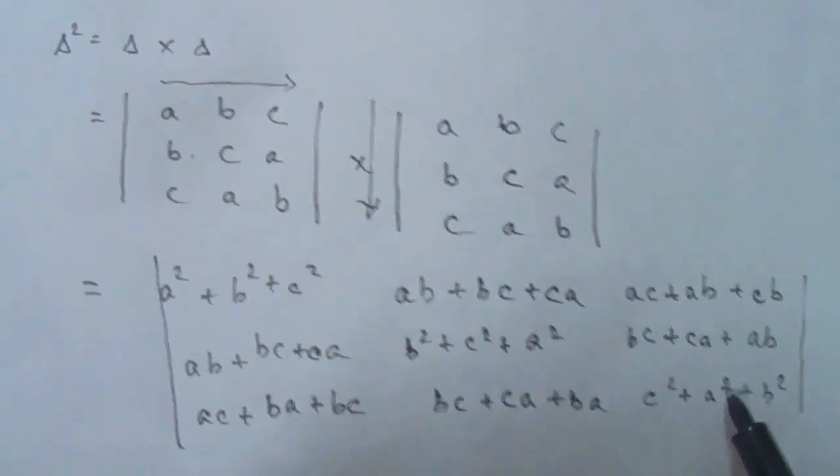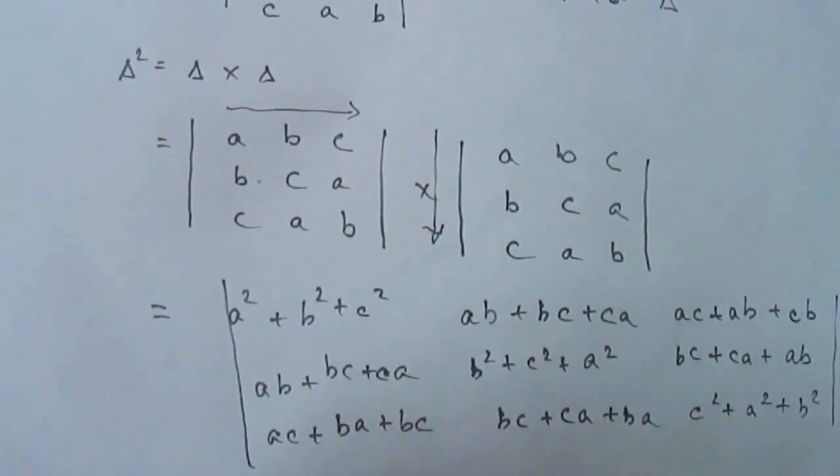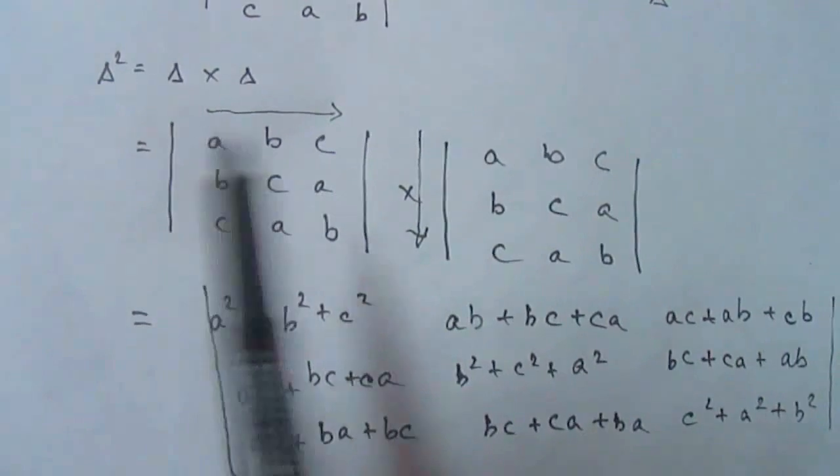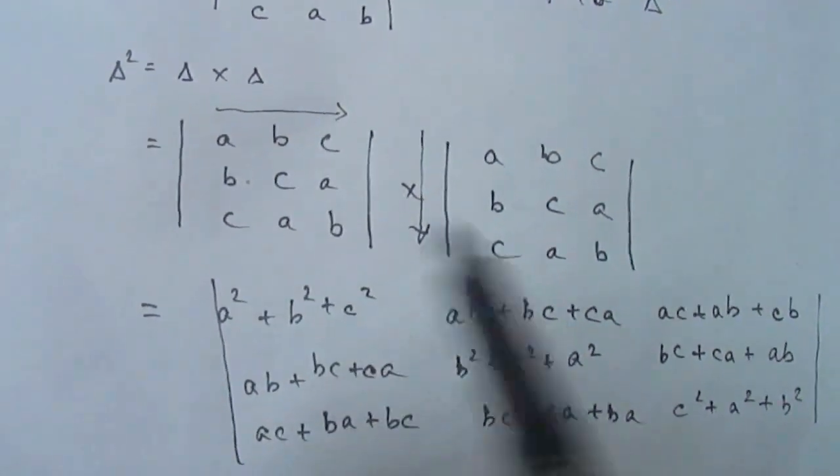This is your product and this is your answer for del square. You have to remember rows go with columns and you have to repeat the same process.